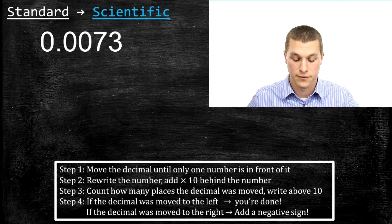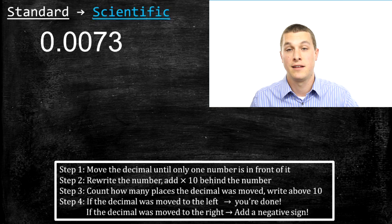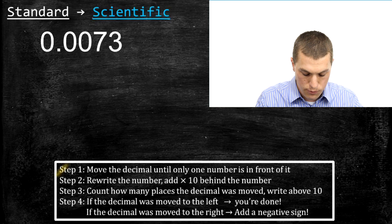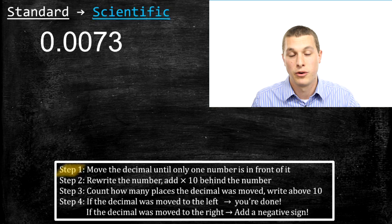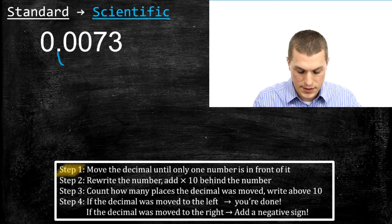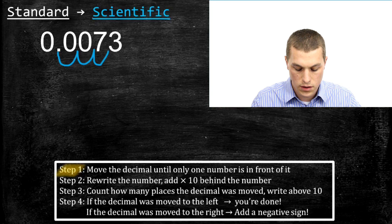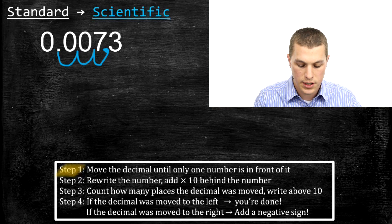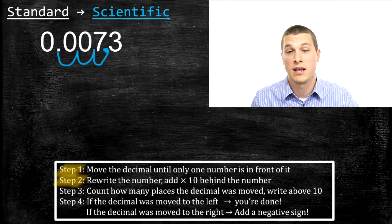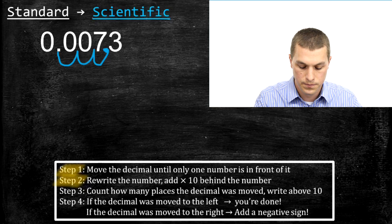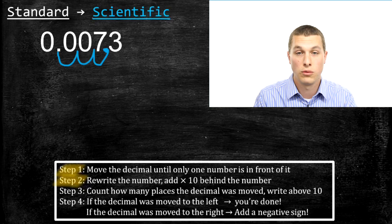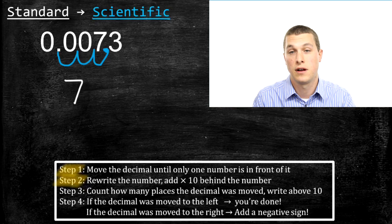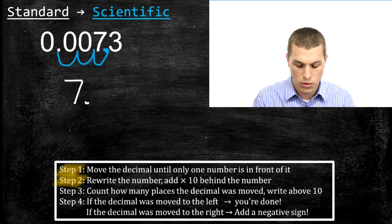We're going to see that the steps are just slightly different — the only real difference is in step four. Step one: move the decimal until there's only one non-zero number in front of it. We're going to bounce this decimal over once, twice, three times. Step two: rewrite that number with a times ten. We're going to drop those leading zeros — they don't change the number — so we start by writing 7.3, because we've moved that decimal to between the seven and the three, and we add a times ten.